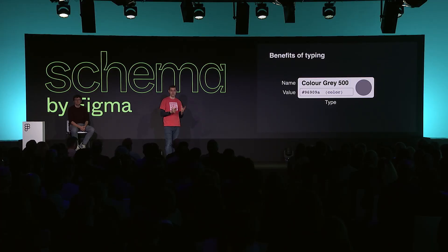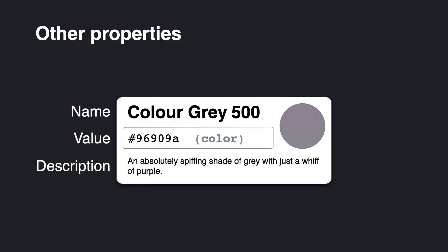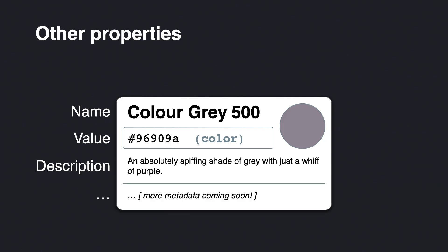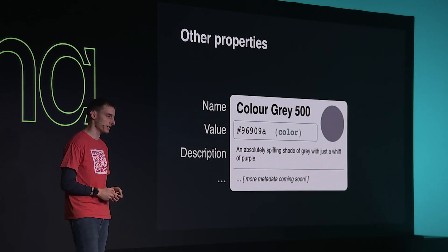Beyond name, values, and types — which are the mandatory bits of information stored for tokens — we have optional descriptions. You can add descriptions to your tokens, which you can imagine appearing in a style guide, as a tooltip in a design tool, or as a code comment if you export the token as code. There are currently a number of additional bits of metadata being proposed and considered for inclusion in the format, so we expect there to be more information you can associate with design tokens in the future.